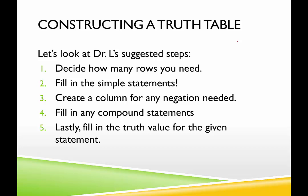The formula considers the possible combinations of trues and falses for all the simple statements. If you watched my videos on set theory, you may recall flipping coins and the possible combinations — this is the same idea, since there are two options just like flipping a coin. To decide the number of rows, you need two to the n, where n is the number of simple statements.